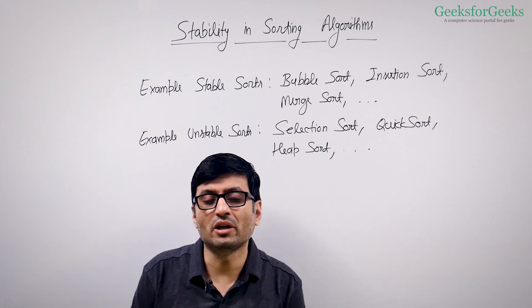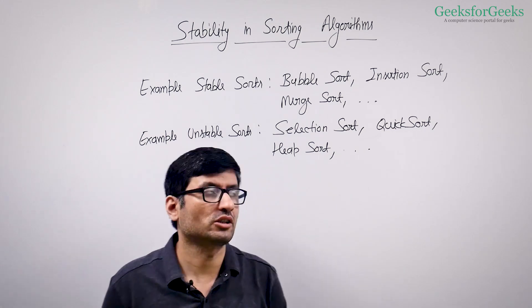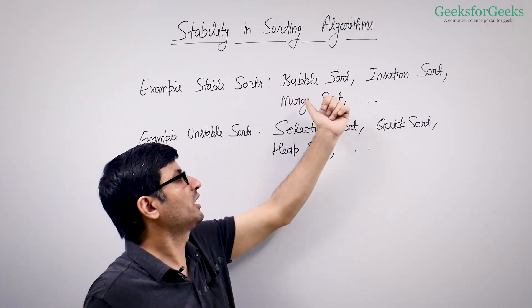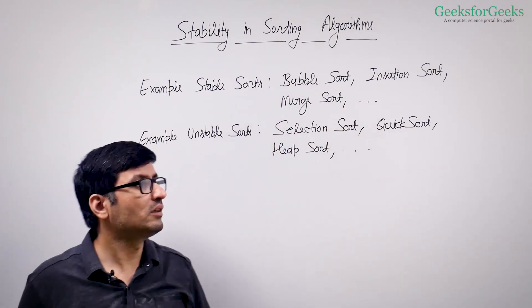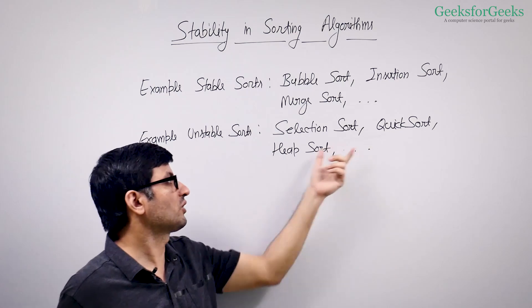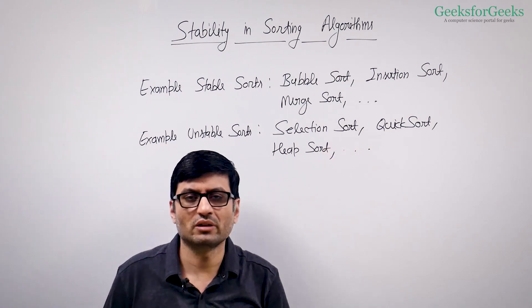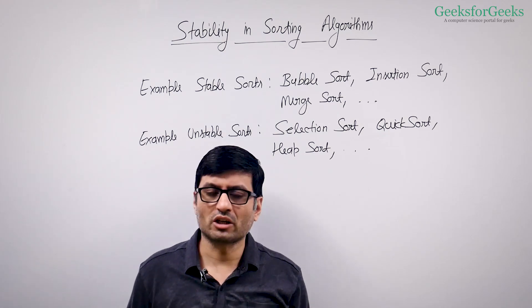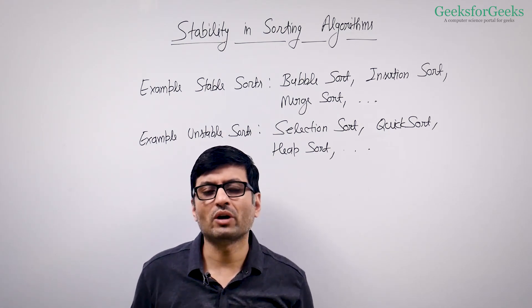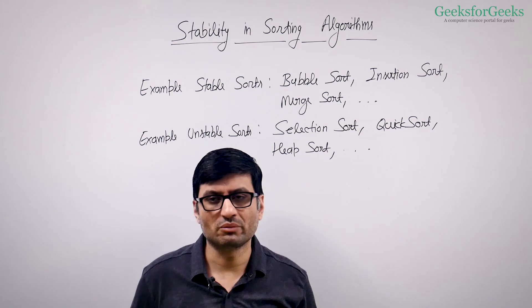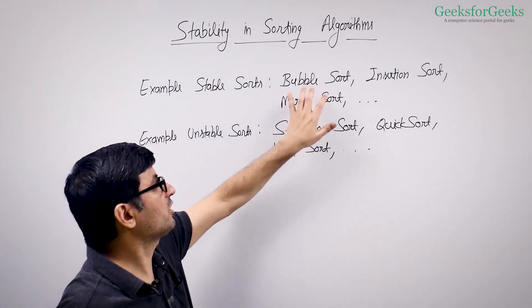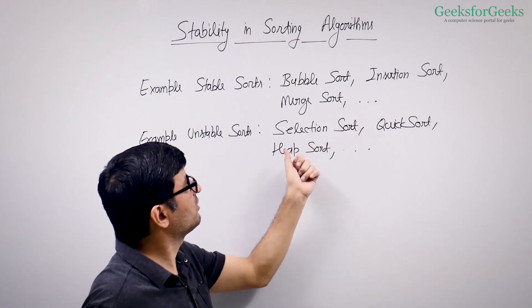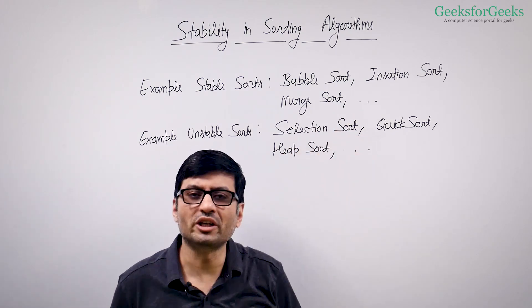Here are some examples of stable and unstable sorting algorithms. Bubble sort, insertion sort, and merge sort are stable. Selection sort, quick sort, and heap sort are unstable. I'll cover one example of each — bubble sort and selection sort — to give you an idea of why these are stable or unstable. The other algorithms we'll discuss their stability individually when we cover them.